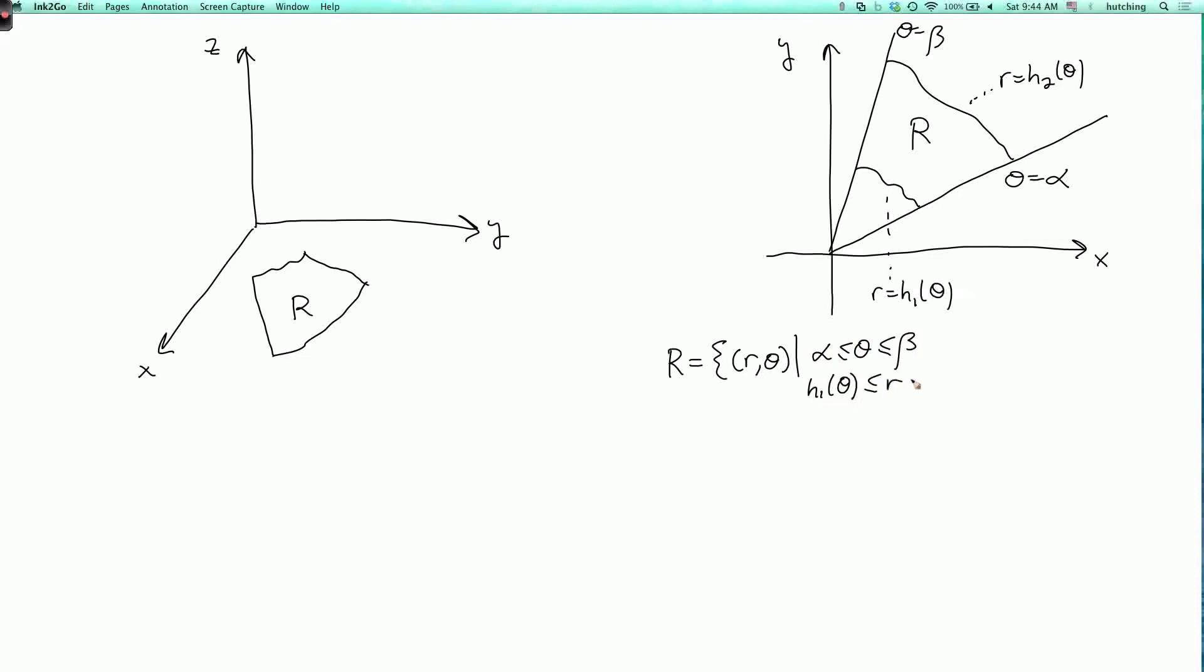And h1 of theta is less than or equal to r is less than or equal to h2 of theta. Now we're going to look at a solid region whose shadow is r, and it's going to have vertical walls over r. So it's going to look something like this. So it's a solid region here.